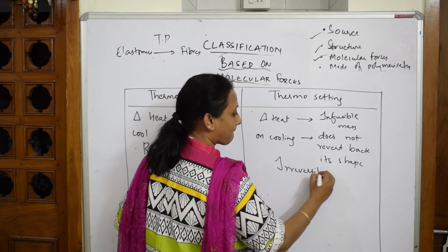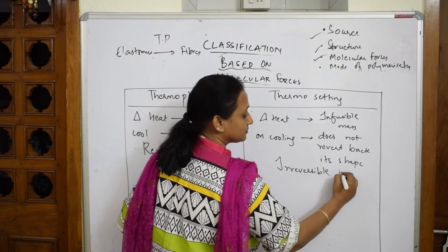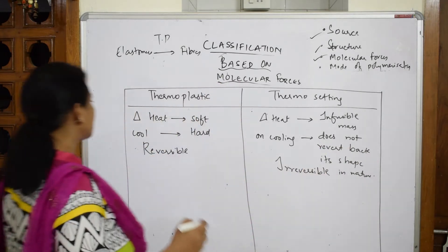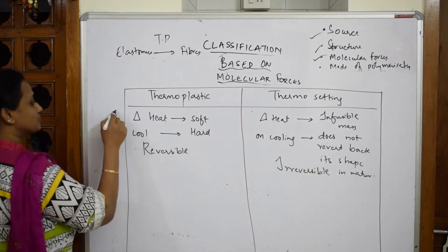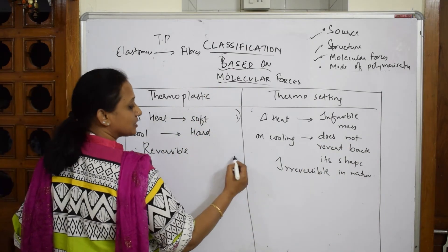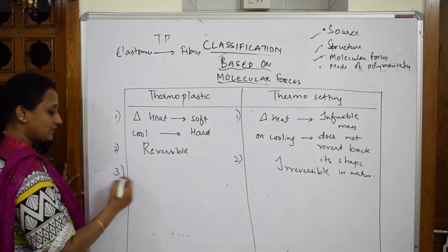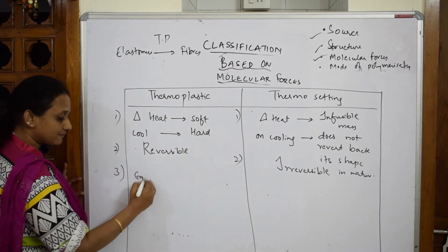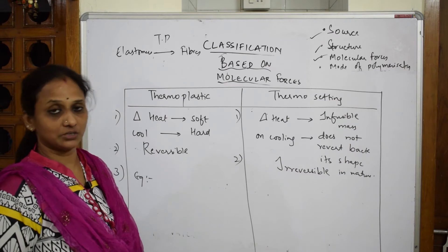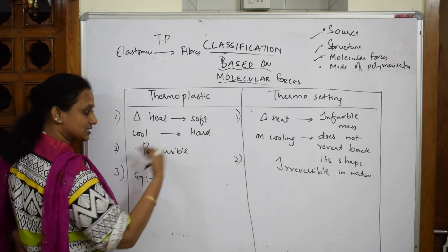Thermosetting polymers are irreversibly cured — irreversible in nature. Now for examples: thermoplastic polymers can regain their shape, so examples include polythene and PVC.